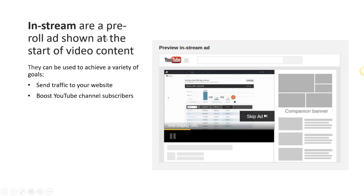In-stream ads can be pre-roll, shown at the start of a video, or they can go in the middle or end. They can be used to achieve a variety of goals: send traffic to your website, get people to sign up for a webinar, sign up to watch a longer training, and so on. They can also help boost your YouTube channel subscribers.